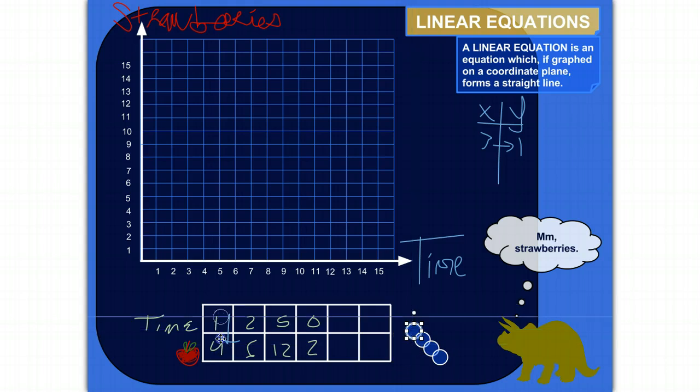Let's start with this first data point here. Time equals one minute, I've eaten four strawberries. On the x-axis, we've got time is one, and then strawberries is one, two, three, four. Let's put that point there.